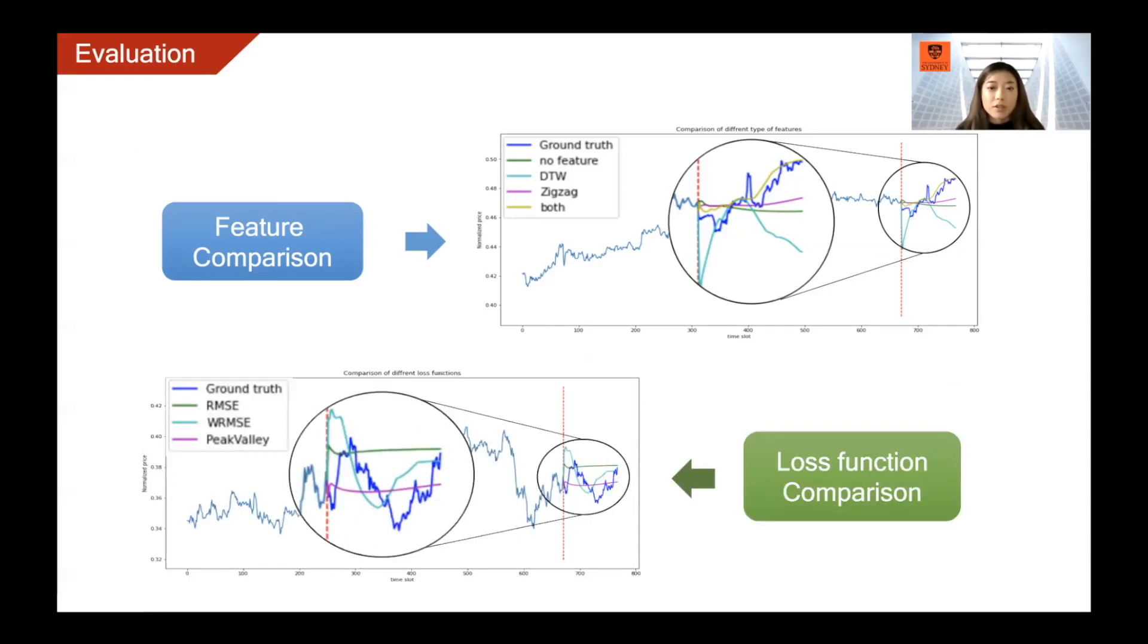The graph below shows the comparison of different loss functions when trained for the same number of epochs. Model used weighted RMSE can provide a more oscillating prediction, indicating that it can help speed up model training by providing more information about the peaks and the valleys in the ground truth.